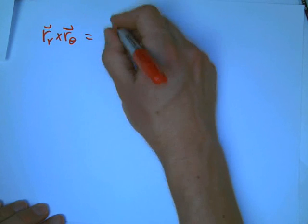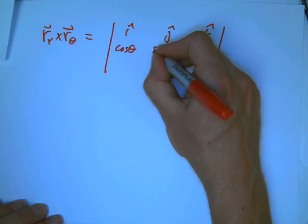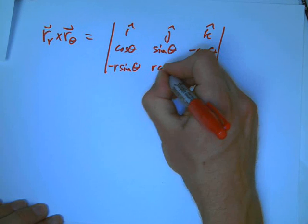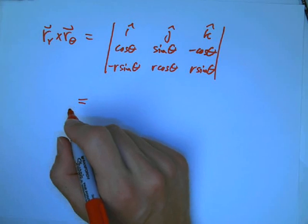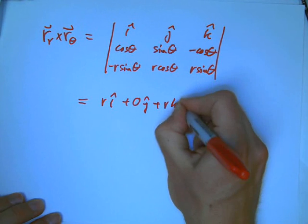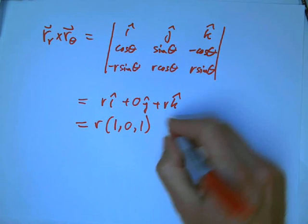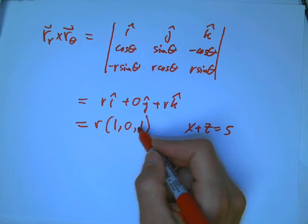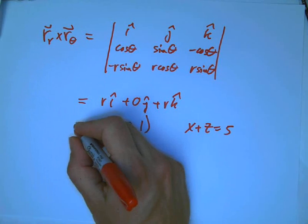So our cross product, which is the main part of the dS, that's going to be cosine theta, sine theta, minus cosine theta, minus r sine theta, r cos theta, r sine theta. There's some nice sine squared and cosine squared stuff that goes on with that. And the upshot is I get r i plus 0j plus rk. Okay, and there's a check for that. When you have a flat plane, this is just r times 1, 0, 1. That is a normal vector. Remember the equation was x plus z equals 5. 1, 0, 1 are the coefficients there. So it has to be some multiple of 1, 0, 1. And surprise, surprise, surprise, we get an r coming out as the distortion factor.